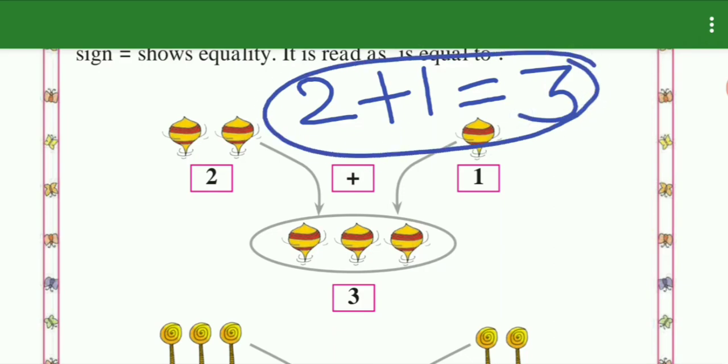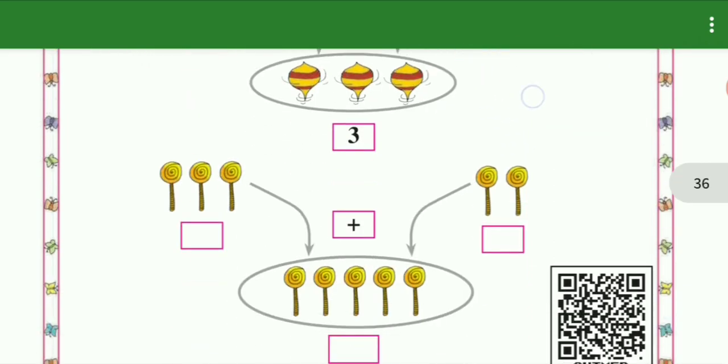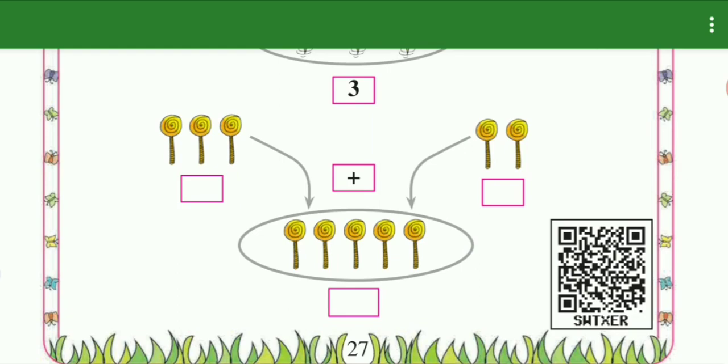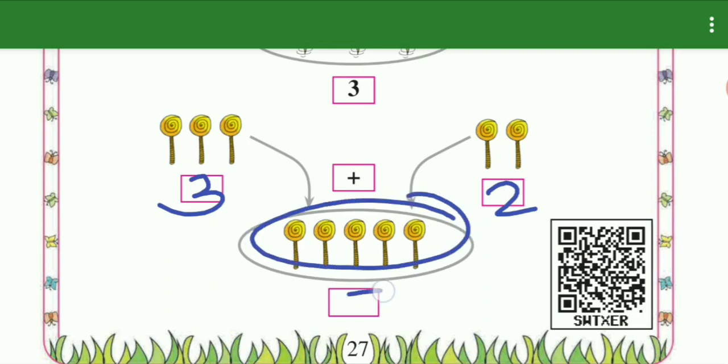Now we have lollipops. How many lollipops? Three lollipops, two lollipops. Three plus two equals five lollipops.